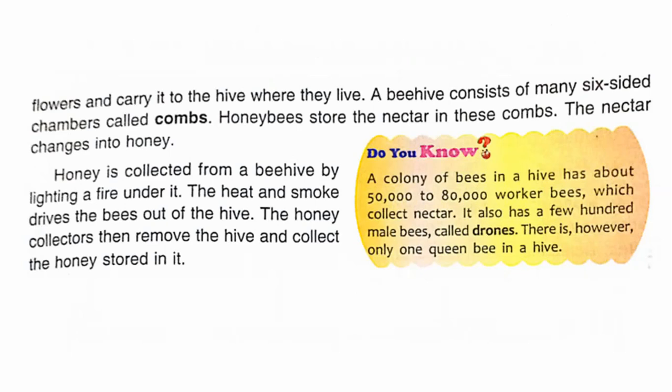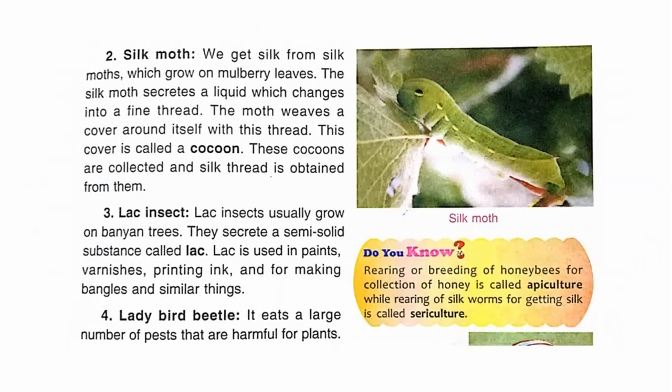The second useful insect is the silk moth. We get silk from the silk moth, which grows on mulberry leaves. The silk moth secretes a liquid which changes into a fine thread. The moth weaves a cover around itself with this thread, called a cocoon. These cocoons are collected and silk thread is obtained from them.